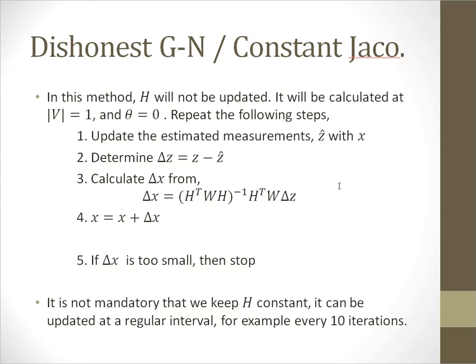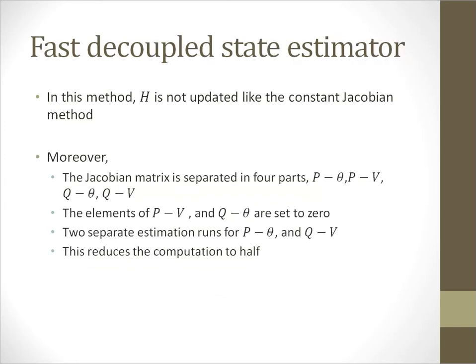In the fast decoupled state estimator, like the constant Jacobian method, H will not be updated. Moreover, we are going to separate the whole Jacobian matrix in four parts: P-theta, P-V, Q-theta, and Q-V. The elements of P-V and Q-theta are set to zero.